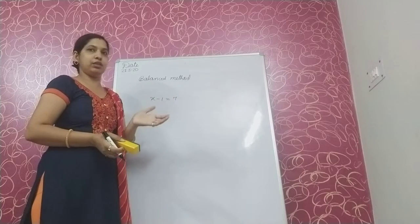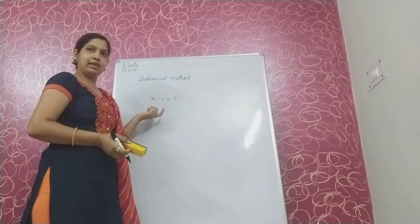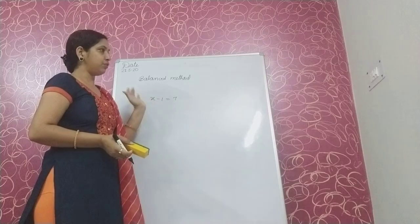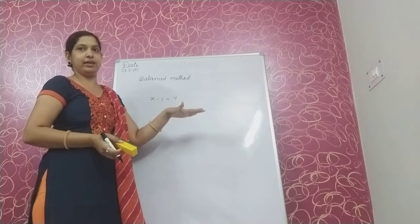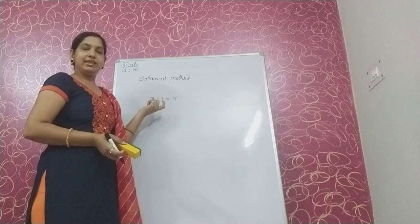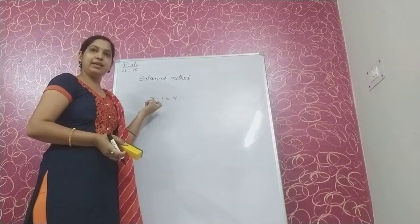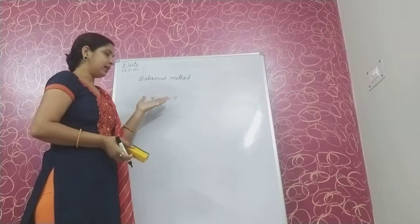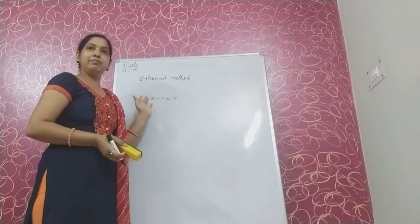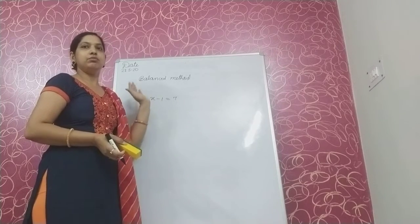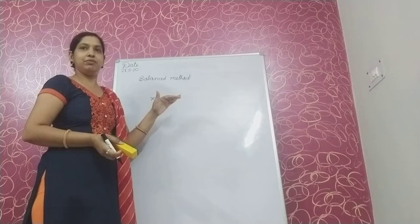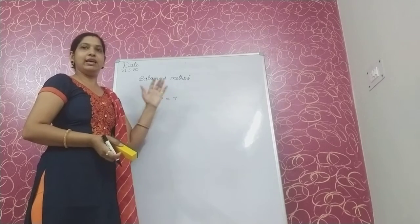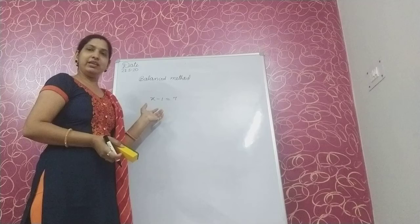The value of x is on the right side. If the number is plus with the variable, then we subtract the right side. If the number is minus with the variable, then we add on the right side. When we transpose, the multiplier will divide and the dividing number will multiply.